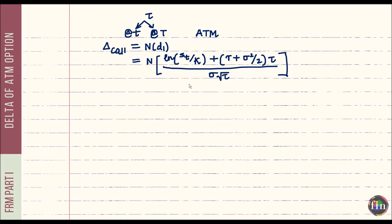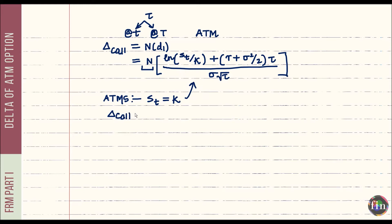N here computes the area to the left under the CDF of the standard normal distribution. For an at-the-money spot option — where the current stock price S_t equals the strike price K — the ln(S_t/K) term goes to zero (log of 1 is 0), leaving delta of the call as N[ (r + σ²/2)·τ / (σ√τ) ].